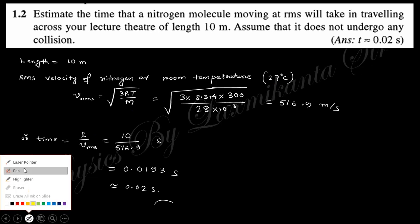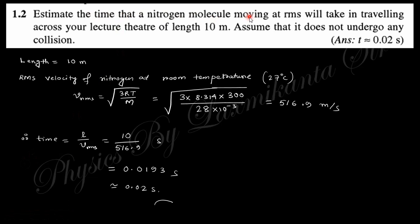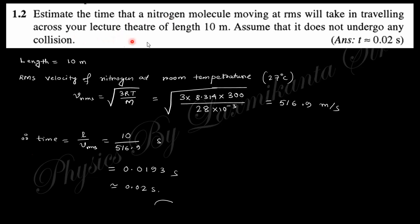Question two: estimate the time a nitrogen molecule moving at the RMS velocity will take to travel across a lecture theater of length 10 meters. The RMS velocity of a nitrogen molecule at room temperature is found using the formula √(3RT/M). In SI units with M = 28 × 10⁻³ kg, this gives 516.9 meters per second. Time equals length divided by velocity, giving the travel time across 10 meters.